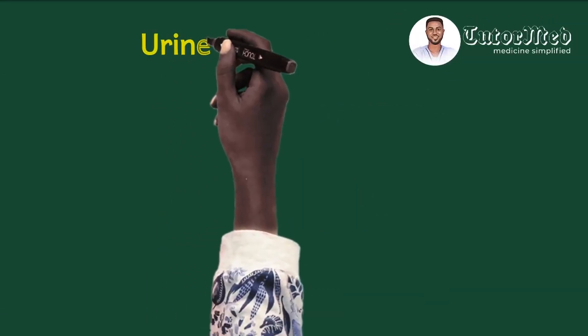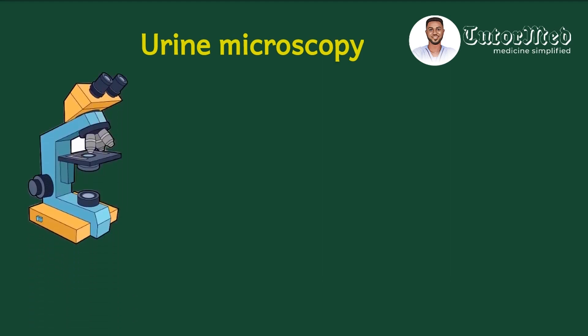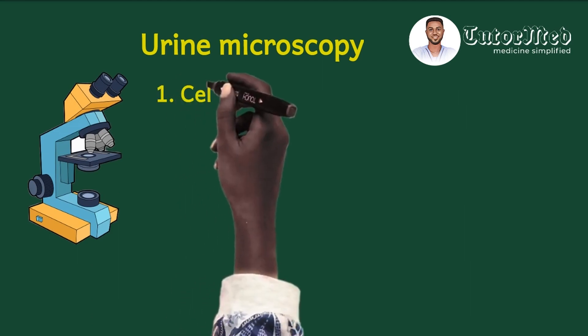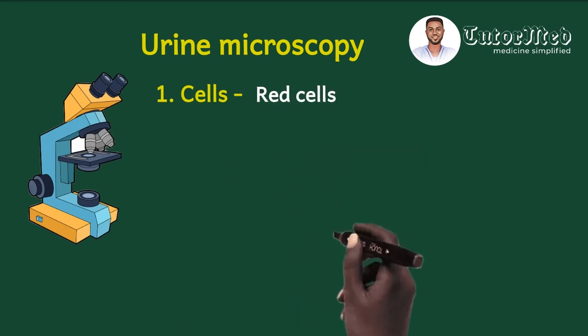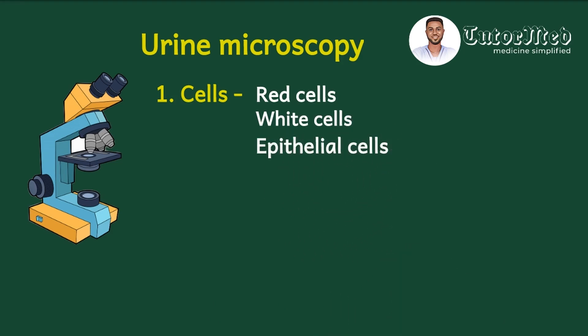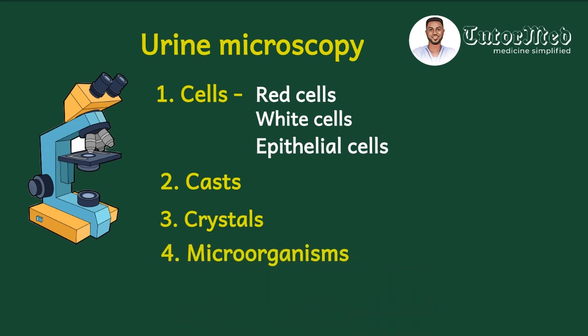The last component of urinalysis is urine microscopy. The lab technician takes a sample of the urine and places it in a centrifuge, spinning it at more than 1500 revolutions per minute so the urine separates into a liquid part called the supernatant and a relatively solid part called the sediment. It is the sediment you examine under the microscope. You look for: (1) cells — red blood cells, white blood cells, epithelial cells; (2) casts; (3) crystals — like calcium oxalate, cystine, and uric acid crystals; and (4) microorganisms such as bacteria and Candida.